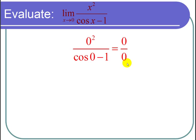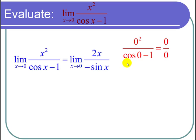L'Hopital's Rule says that when we get 0 over 0 in the limit, we can take the derivative of the numerator and denominator and take the same limit. So we still have the limit as x goes to 0. The derivative of x squared is 2x, and the derivative of cosine of x minus 1 is negative sine of x.